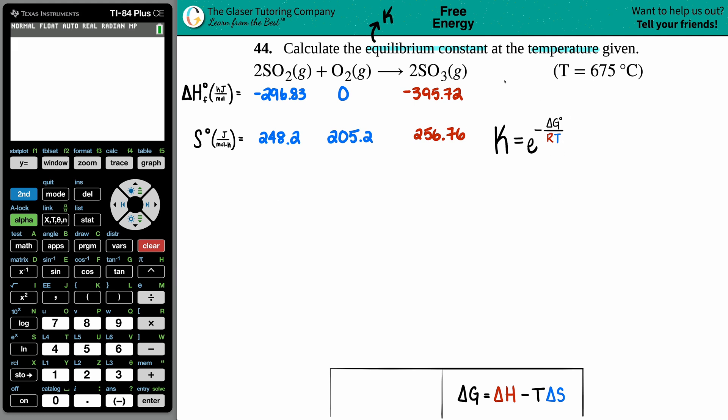Let's start plugging in things that we can. The R value - they didn't give us the R value, but that's because it's a constant. It's never going to change. The R value is 8.314. Units for the R value are joules per mole times kelvin.